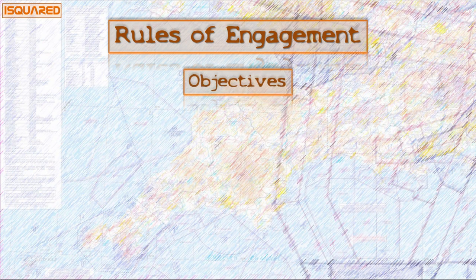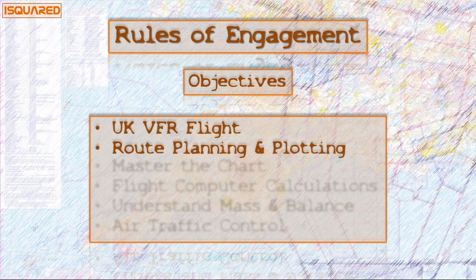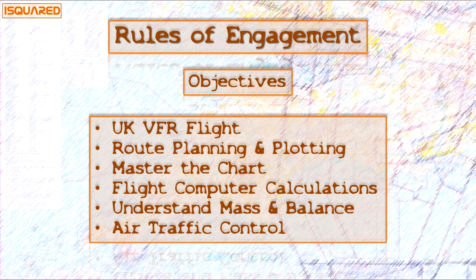We're planning a VFR flight so we need to understand what it means to fly VFR in UK airspace. We're going to plan a route and plot it in detail, which means mastering the aeronautical chart. We'll familiarise ourselves with the flight computer and the routine calculations we need to make, and we need to understand mass and balance. I'll mention ATC when it's relevant and show you where you can find more information if you want to dig deeper.